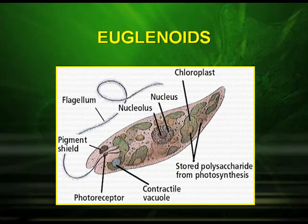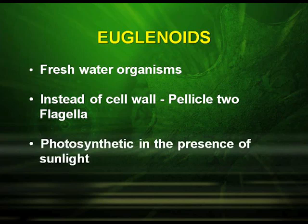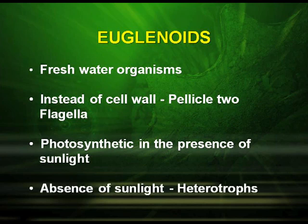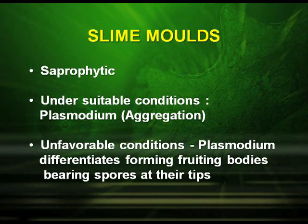Euglenoids are fresh water organisms. Instead of a cell wall they have a pellicle, and they have two flagella. They are photosynthetic in the presence of sunlight, but in the absence of sunlight they behave as heterotrophs. Slime molds are saprophytic. Under suitable conditions they form a plasmodium, which is an aggregation of cells, and under unfavorable conditions the plasmodium differentiates, forming fruiting bodies bearing spores at their tips.